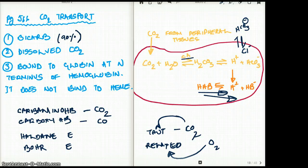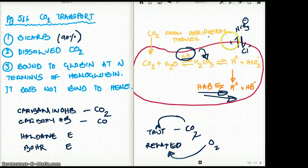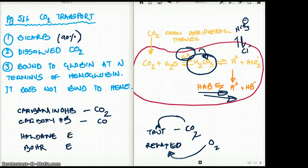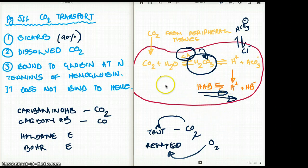Now I'll pose two questions. Number one: why is bicarb made in the RBC and not in the plasma? The answer is that in the plasma there is no carbonic anhydrase, and without carbonic anhydrase, we cannot make any bicarb. Question number two: what situation inside the RBC makes it more prone to produce more bicarb? That would be deoxygenated hemoglobin — deoxygenated hemoglobin drives the equation to the right, producing more and more bicarb.